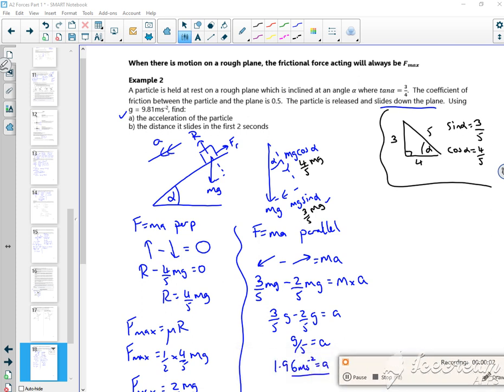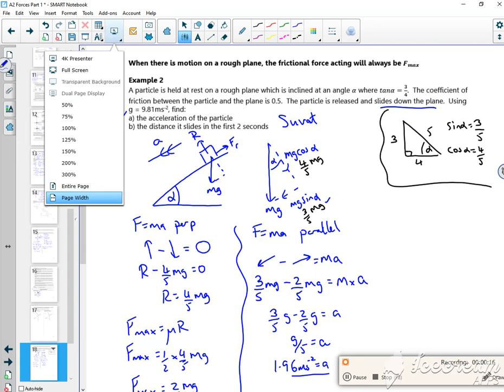These five-minute videos are killing me. Now it says work out the distance it slides in the first two seconds. So I've got a SUVAT because I've got a constant acceleration which I've just worked out as 1.96. I can do SUVATs on this now.